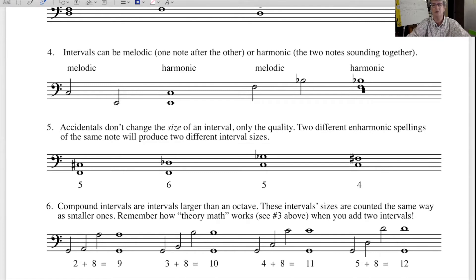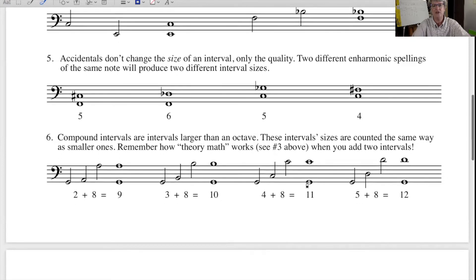Notice that accidentals don't change the size of the interval. They do change the quality of the interval. And that means that it's possible to have enharmonically equivalent intervals that sound the same, but that have two different sizes. For example, here is a fifth from F to C sharp. Here is a sixth from F to D flat. Now, you would say, well, these sound the same. They're the same interval. Well, they are the same when you hear them, but when you see them, you can see that one is a fifth and one is a sixth.